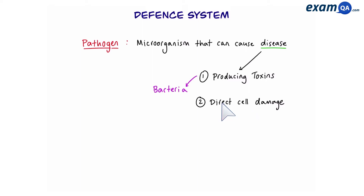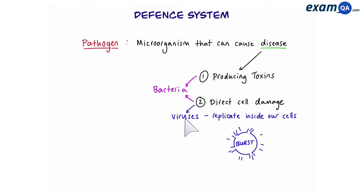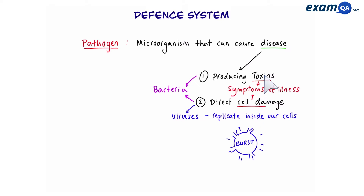Bacteria can produce toxins and they can also directly damage our cells. Viruses can also damage our cells by going inside them and making them blow up. It's the presence of toxins and/or cell damage that eventually leads to symptoms.